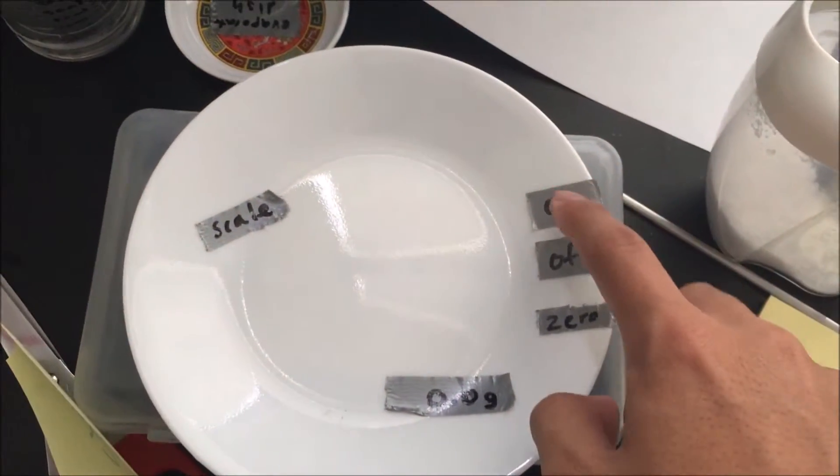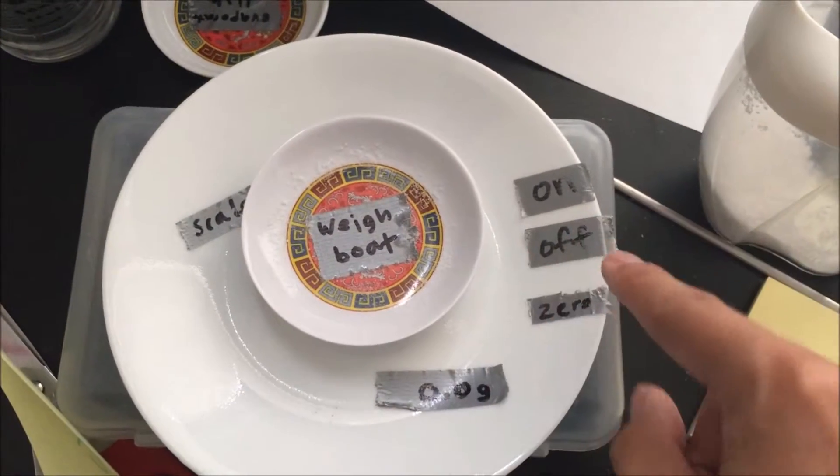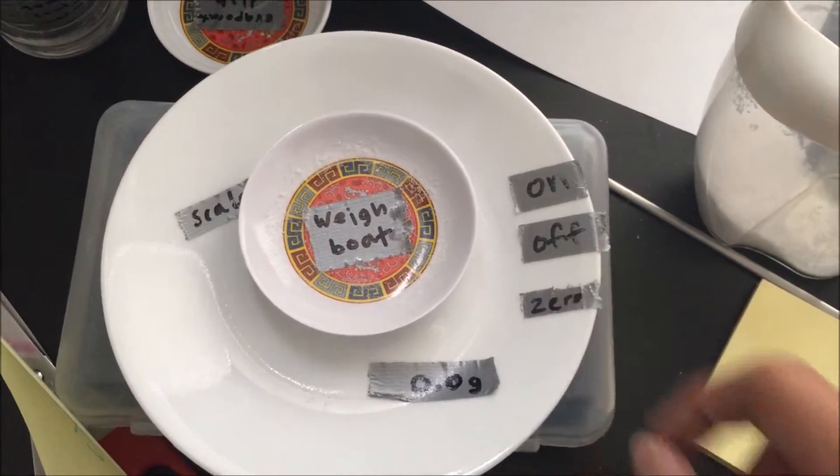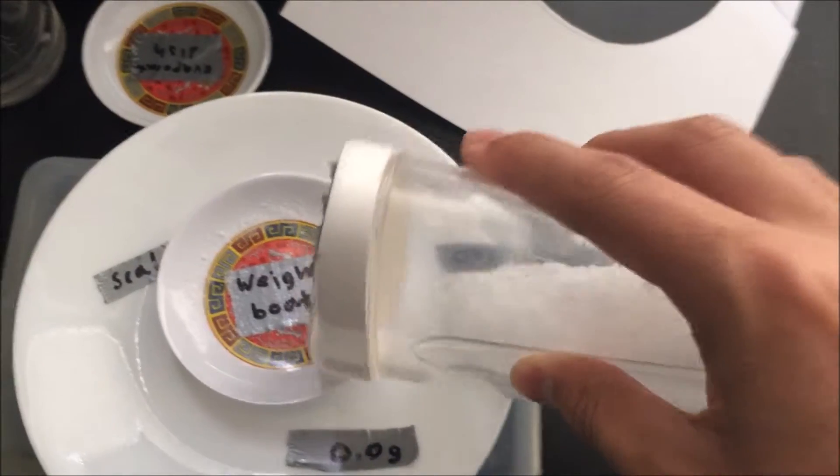Turn on electric balance and place weigh boat onto scale. Zero it and wait a few moments for the scale to adjust. Then, measure out 5 grams of NiCl2 using a scoopula.